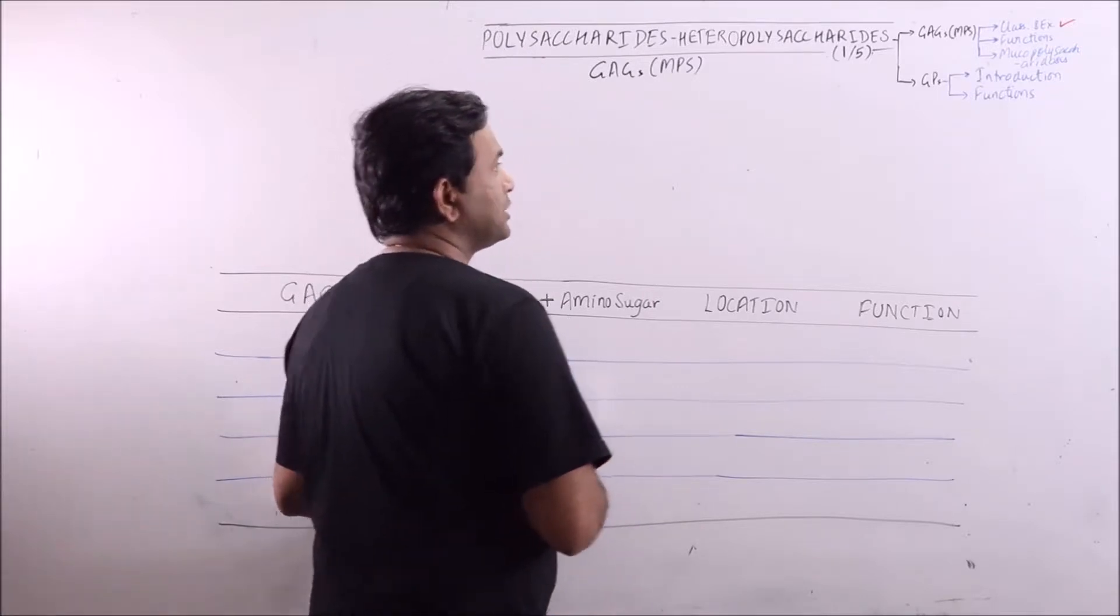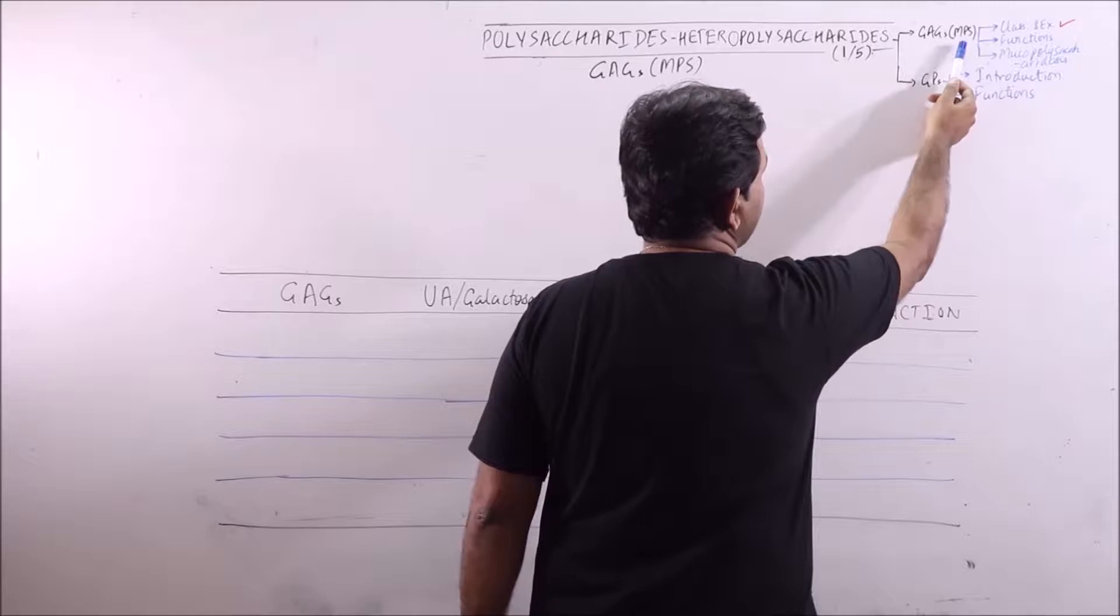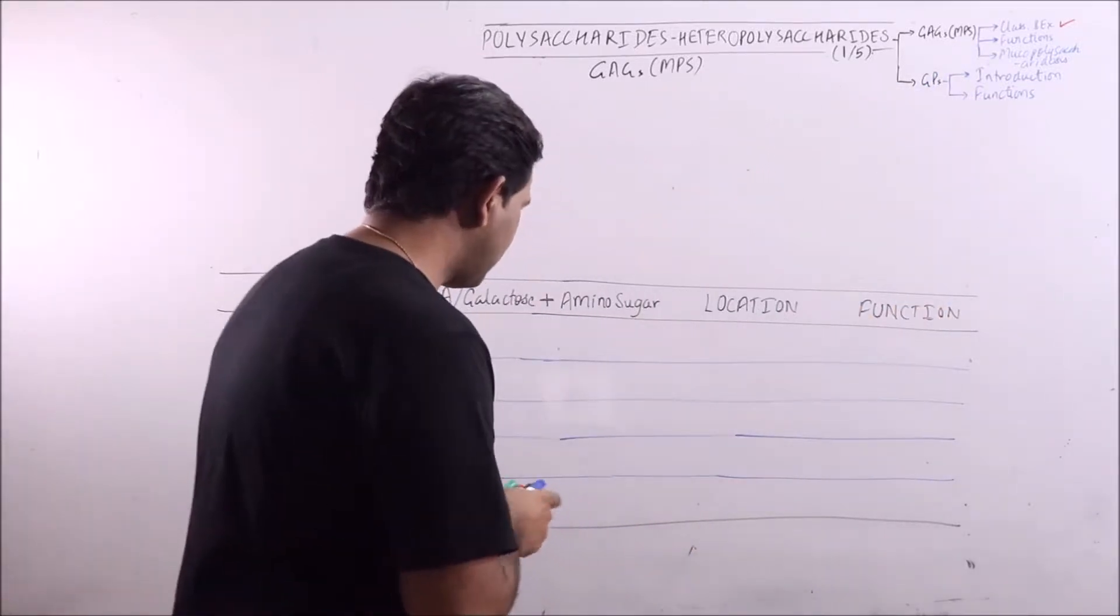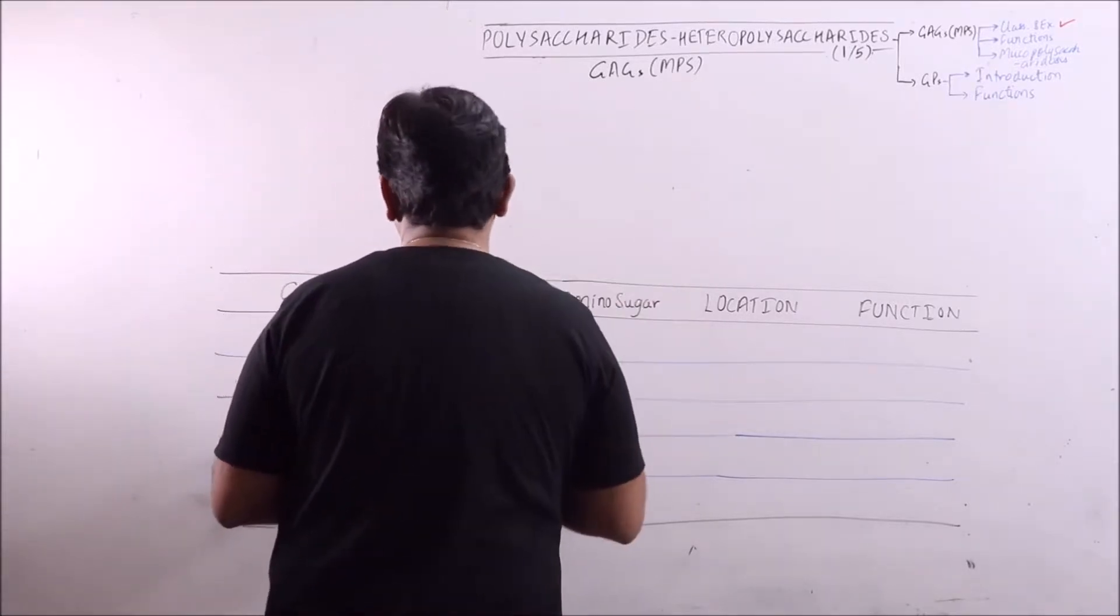The heteropolysaccharides are basically divided into two groups: glycosaminoglycans or mucopolysaccharides, and the second one is glycoproteins. So first of all we will discuss what is glycosaminoglycans or mucopolysaccharides.